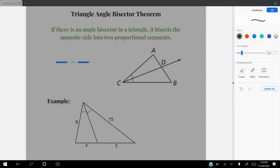In this lesson, we're going to learn about the triangle angle bisector theorem. It says if there is an angle bisector in a triangle, it will bisect the opposite side into two proportional segments.